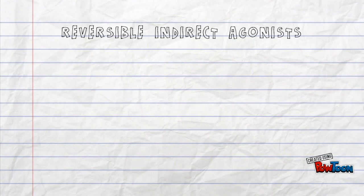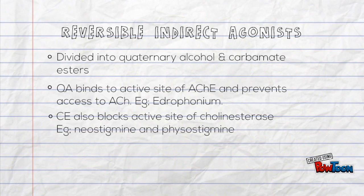Under reversible indirect agonists, they are divided into quaternary alcohols and carbamide esters. Quaternary alcohols bind to the active site of acetylcholinesterase and prevent access to it — for example, edrophonium. Carbamide esters also block the active site of cholinesterase — for example, neostigmine and physostigmine.